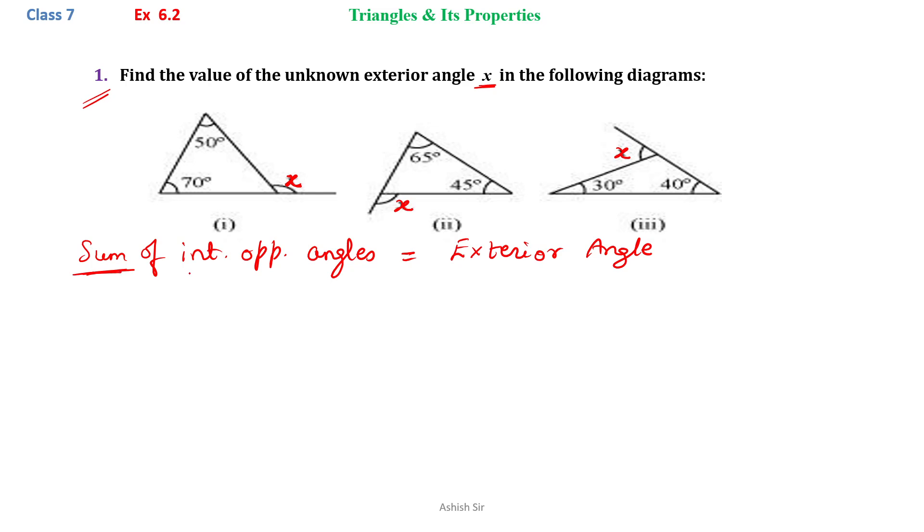Sum means addition of interior opposite angles—the interior angles should be opposite, not adjacent, to angle x. In the first part, the opposite angles are given as 50 and 70 degrees.